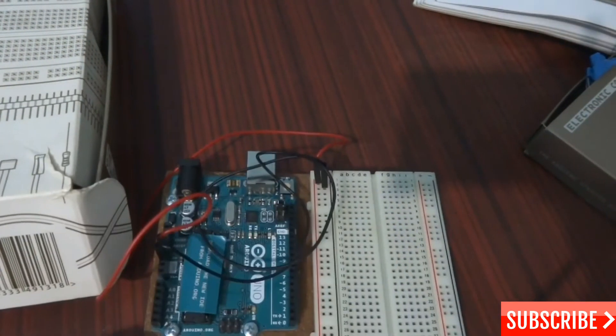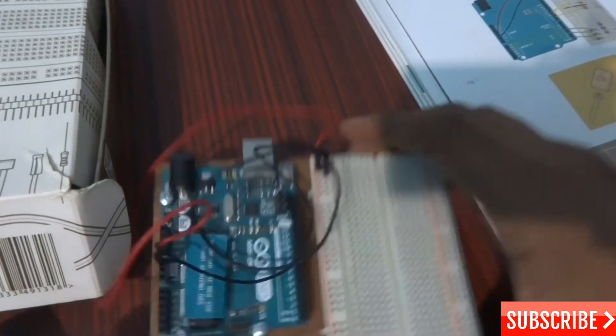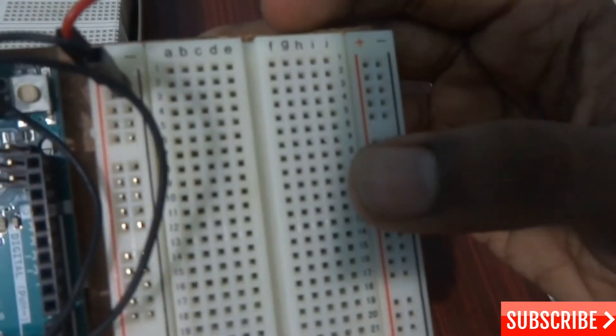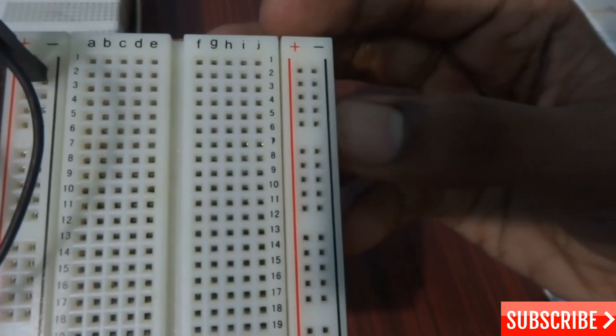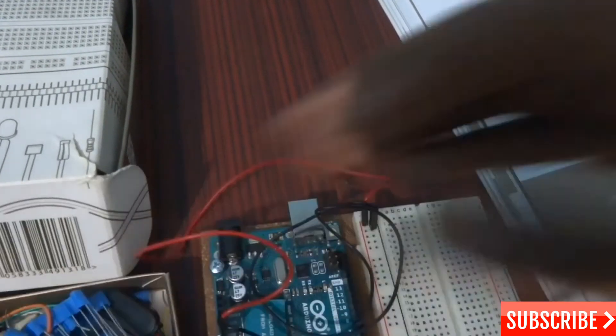First we have to take the breadboard on the Arduino. Over here you can see ground and 5 volt - this is the ground and that's the 5 volt. You have to connect these pins to the plus and minus in the breadboard. I'm going to get some wires.